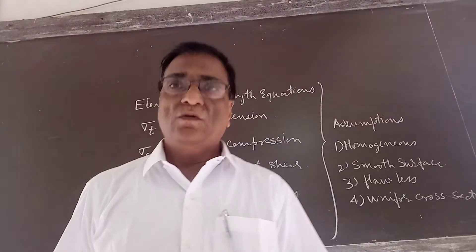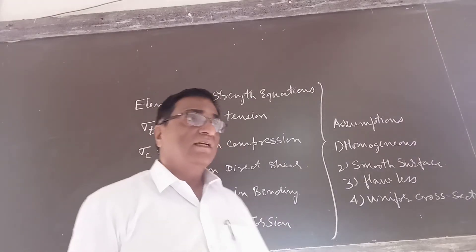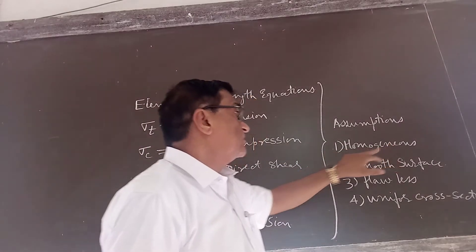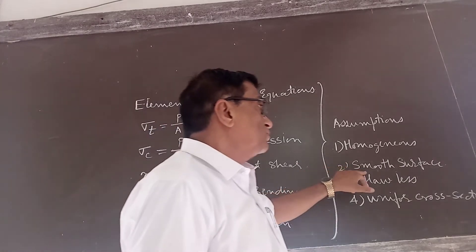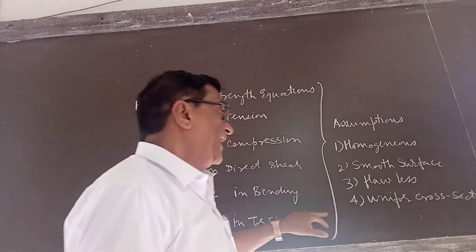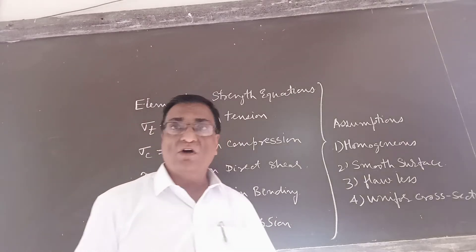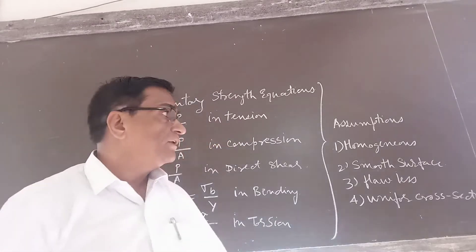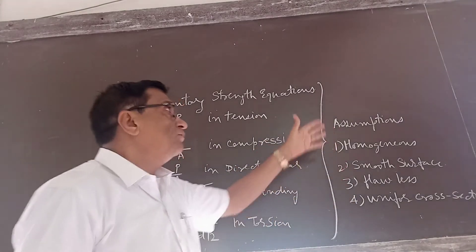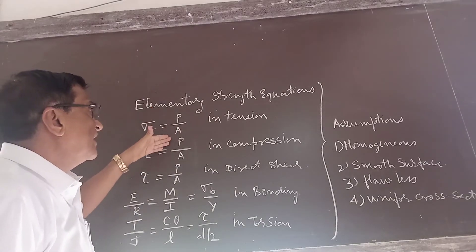While determining the strength equations of a member, there are certain assumptions: the material is homogeneous, the material is smooth having smooth surface, it is flawless and uniform in cross-section. But in actual practice, it is not true. The strength equations based on these assumptions include sigma T equal to P upon A in tension.